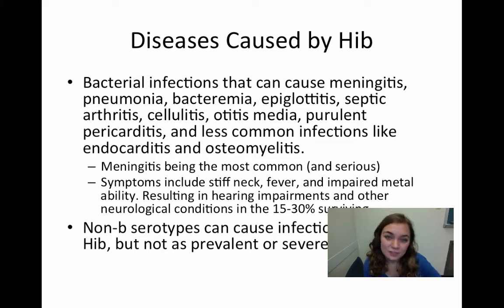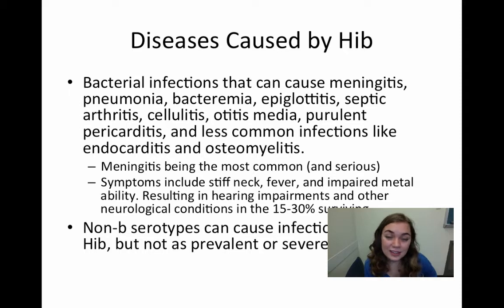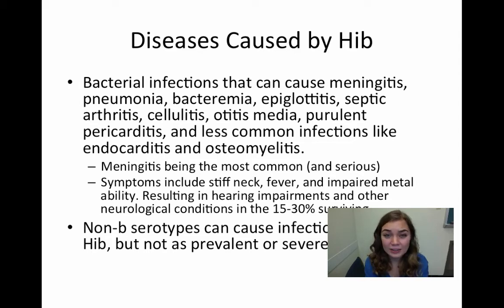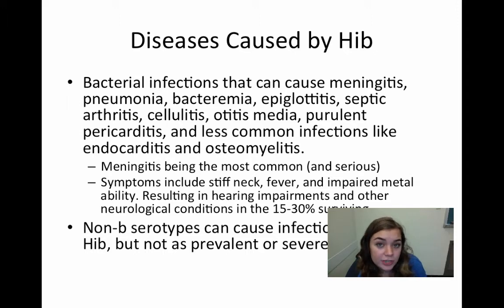Meningitis is probably the most severe and also the most common of the three. Symptoms include stiff neck, fever, and impaired mental function, and results in hearing impairment and other very serious neurological conditions — and this is only in the 15–30% that actually survived the disease. Meningitis has a very high mortality rate. Non-B serotypes and unencapsulated strains do cause infections similar to Hib, but they're not as serious and they're definitely not as prevalent.